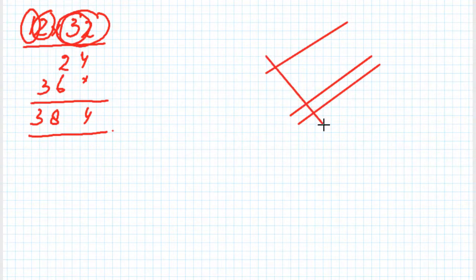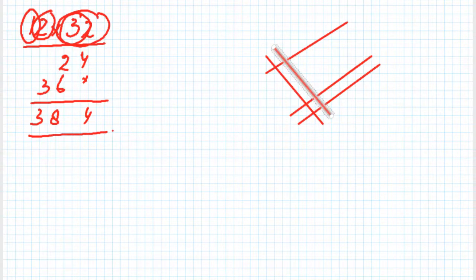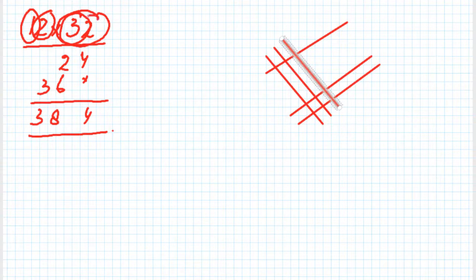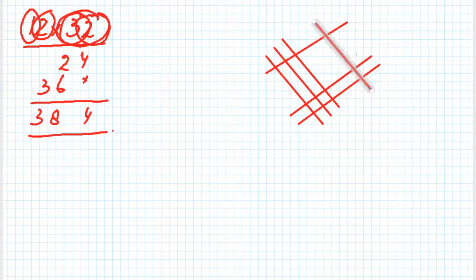Draw three lines in the crossing direction — one, two, three. Then there is the second digit of 32, which is 2, so draw two lines at some distance from those three lines but in the same direction — this is the first line and this is the second line.